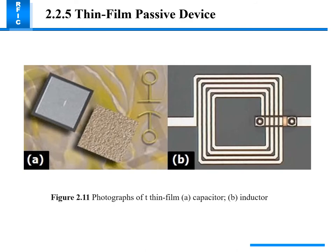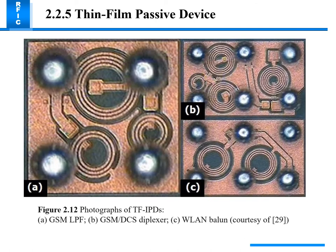A photograph shows a thin film capacitor and inductor. Another photograph of TF-IPD shows a GSM LPF where 'A' is an inductor coil, 'P' is a double-land filter, and 'C' is a similar element. This device is a diplexer visible in this picture.